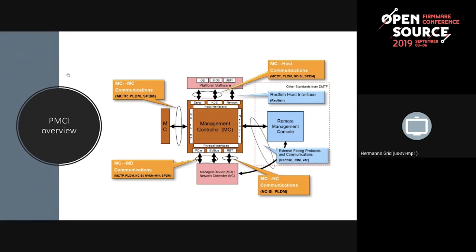PLDM is a way to abstract hardware management functions — things like monitoring temperatures, fan speeds, FRU inventory, the typical management functions. PLDM abstracts them and provides an efficient way to exchange management information inside the box between different management components. There are two other protocols: SPDM, Security Protocol Data Model, which deals with inside-the-box device authentication and firmware management. And lastly there's NCSI, which basically talks about how the BMC can talk to the network controller.